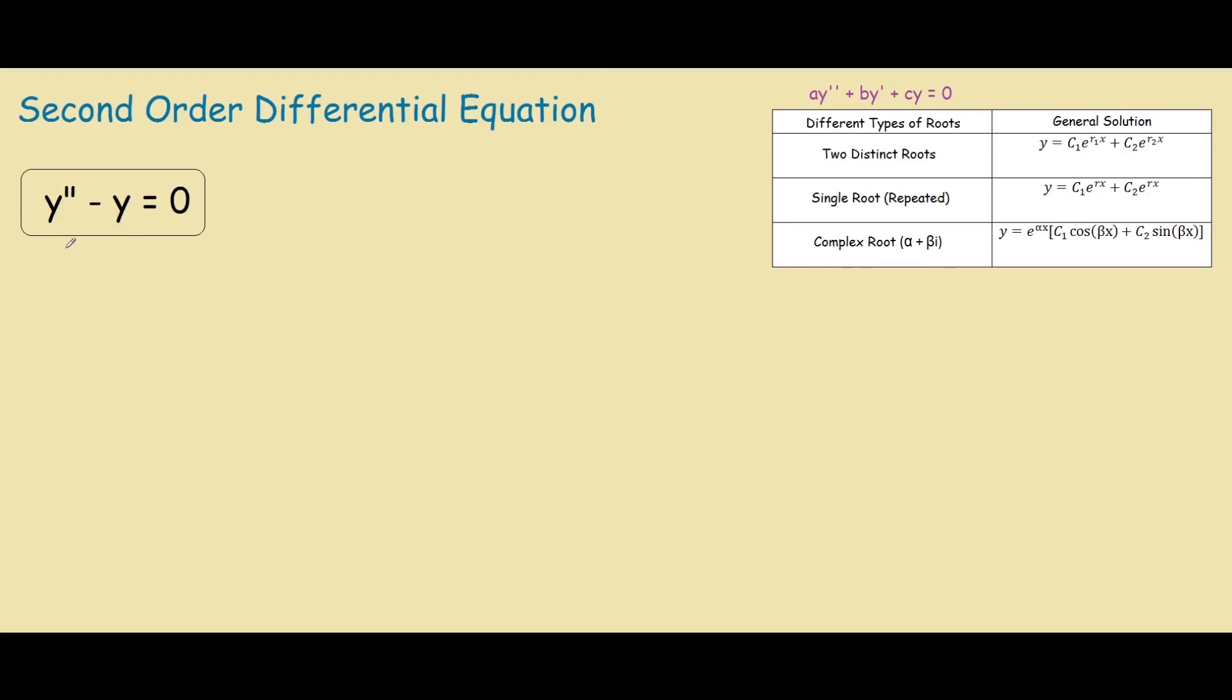So to form the characteristic equation, you look at the power of the derivative. So this one is 2 and this one is 0. So what you have is r squared minus r to the power of 0 equals 0. And this is r squared minus 1 equals 0.